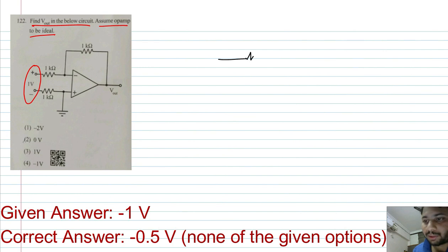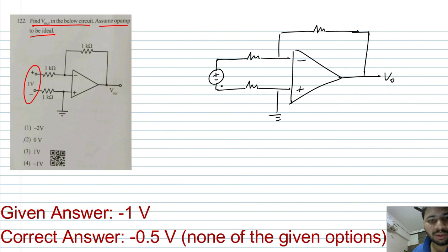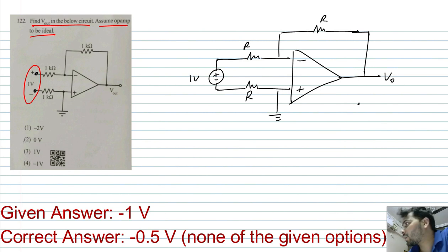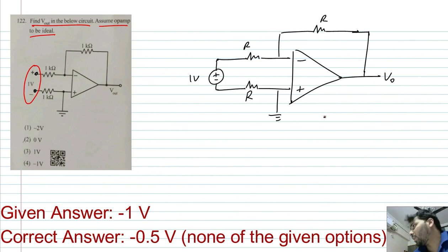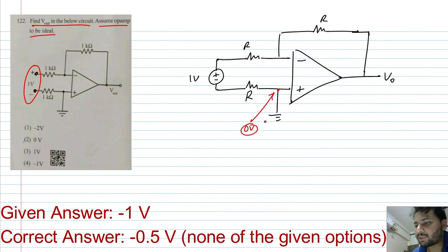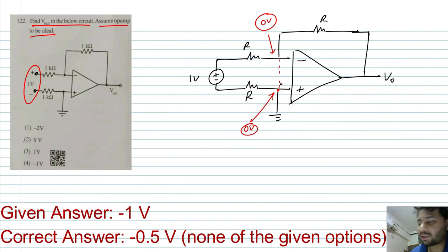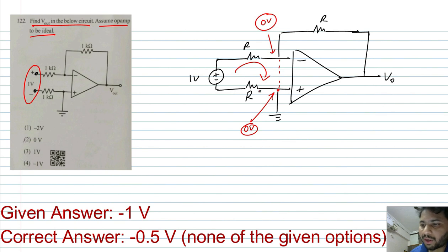Let me draw the neat diagram of the given circuit. Between the two input terminals — this point and this point — I have connected a voltage source of 1 volt. All the resistors are identical; let them be R, where R is 1 kilo-ohm. This op-amp is in negative feedback, so virtual short is valid. The plus input terminal is directly connected to ground, so V+ = 0, and from virtual short V- = 0. These two points are virtually shorted, forming a loop. The current in the loop is 1 volt divided by the net resistance 2R, which is 1/2R.